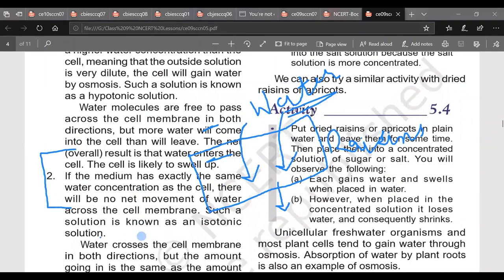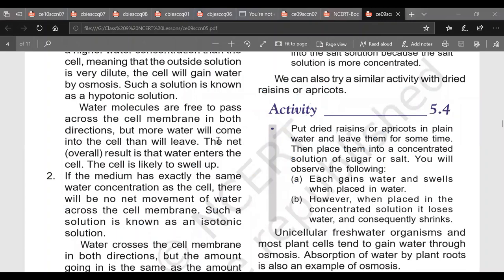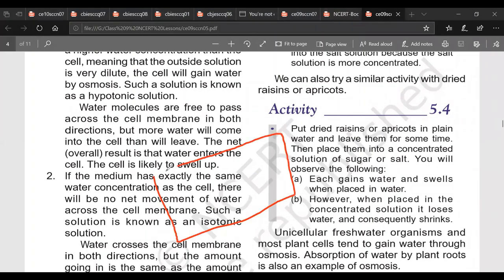If suppose we take our cell and it has same concentration of salt inside as well as outside. So we have taken 0.7 gram of water in 100 ml of water. And here also it is 0.7 gram per 100 ml of water. Then water molecules, see there is equal concentration. Now water molecules will keep on moving in and out, but there will be no net movement in one particular direction. The cell will neither swell up nor it will shrink. So this type of solution is known as isotonic solution.